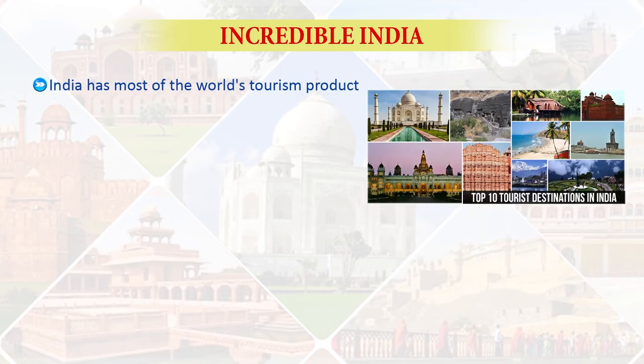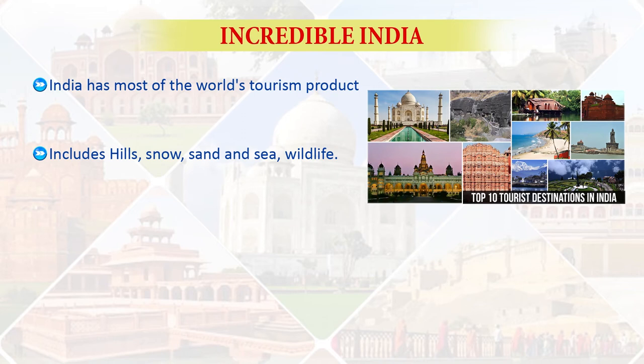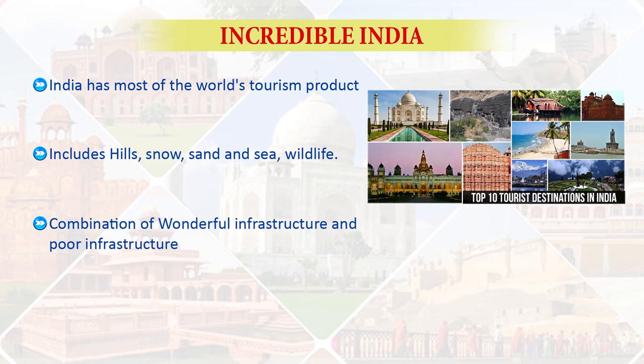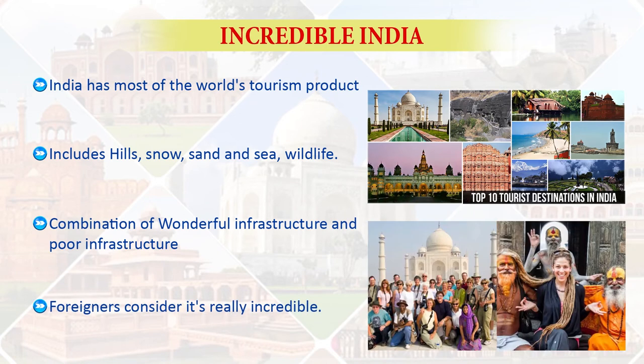Product positioning is the image. When we say 'Incredible India,' it is part of promotion, but it also conveys that India has most of the tourism products available in the world — hill, snow, sand, sea, wildlife. India has wonderful infrastructure, but at the same time there is also poor infrastructure. So when a foreigner comes, they realize that India is really incredible.